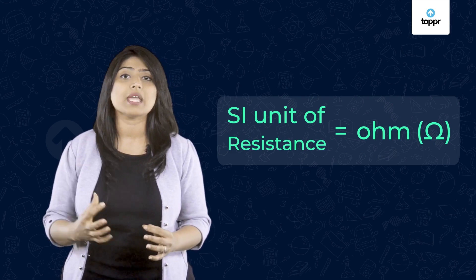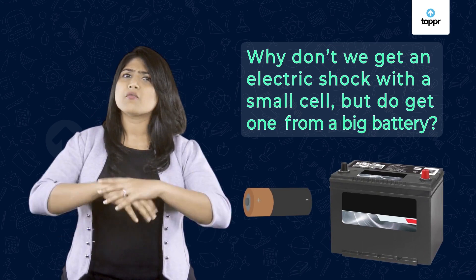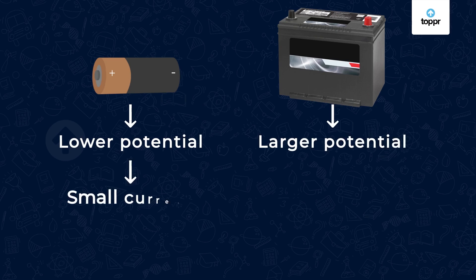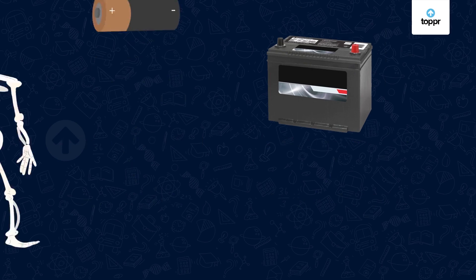Let's go back to our initial question. Why don't we get an electric shock with a small cell, but do get one from a big battery? A cell has lower potential while the battery has larger potential. So, the cell produces a small amount of current while a battery produces a large amount of current. The large current from the battery gives us an electric shock.